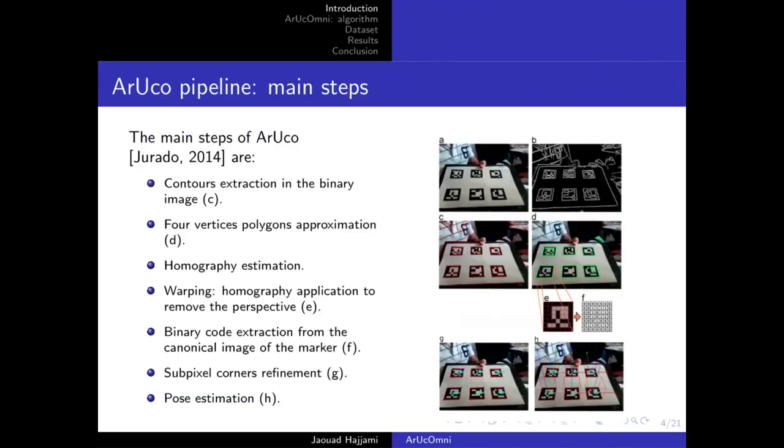The main steps of ArUco for marker detection are: contour extraction performed on the thresholded image, then polygon approximation is executed and it filters out polygons without four vertices.